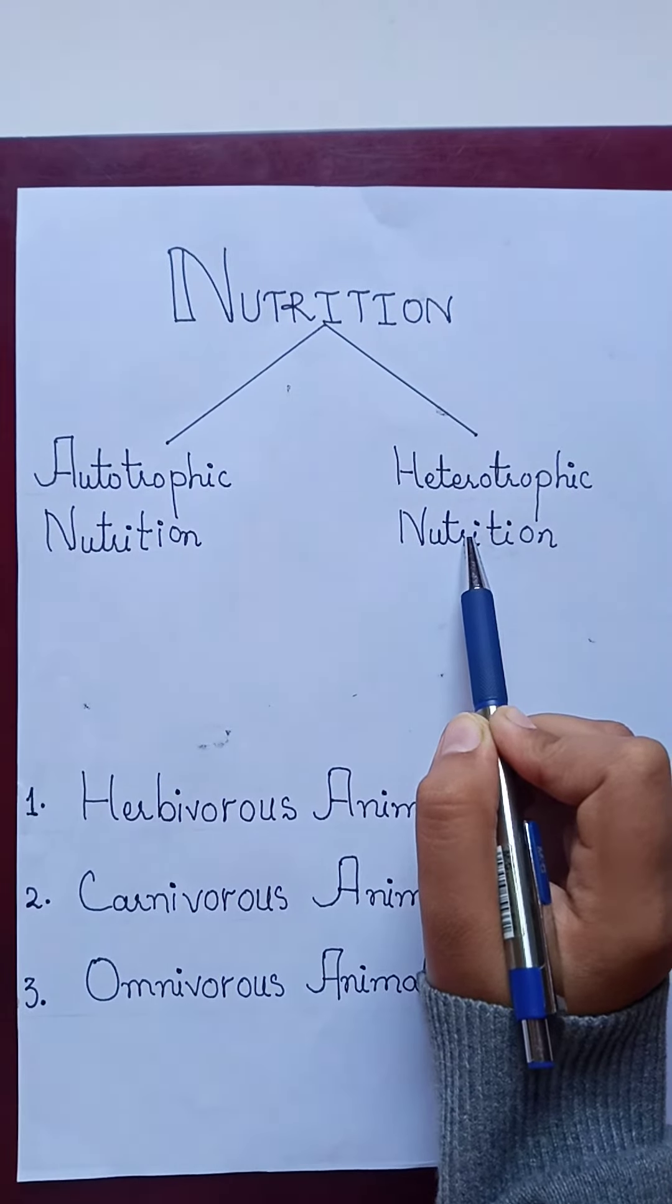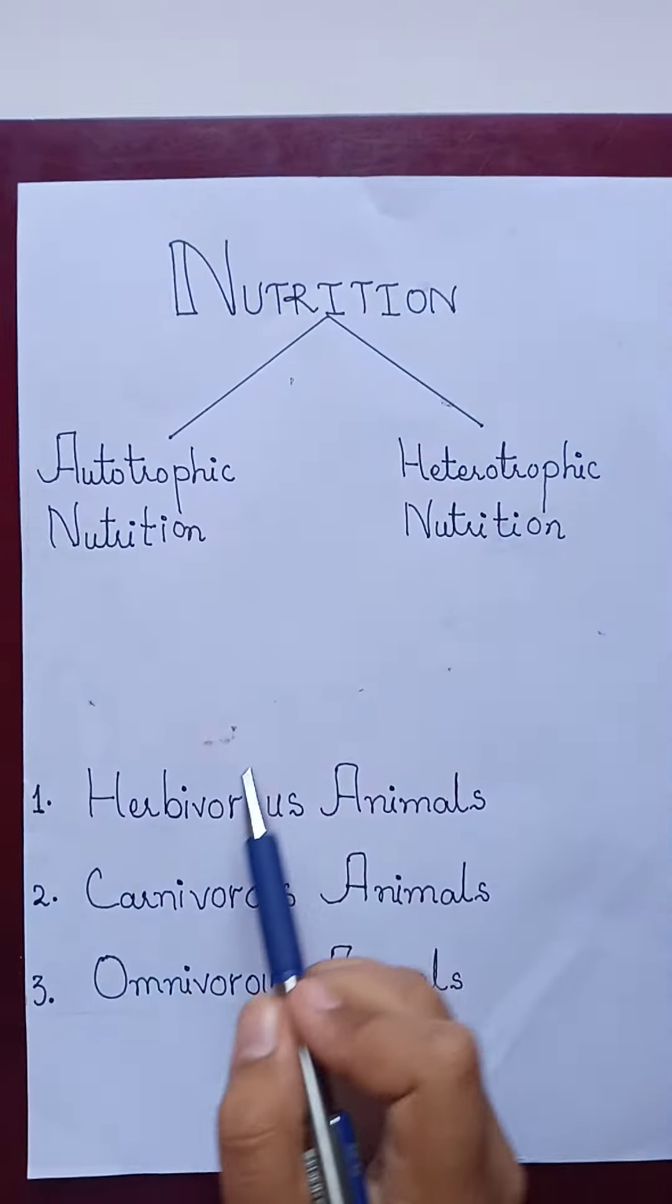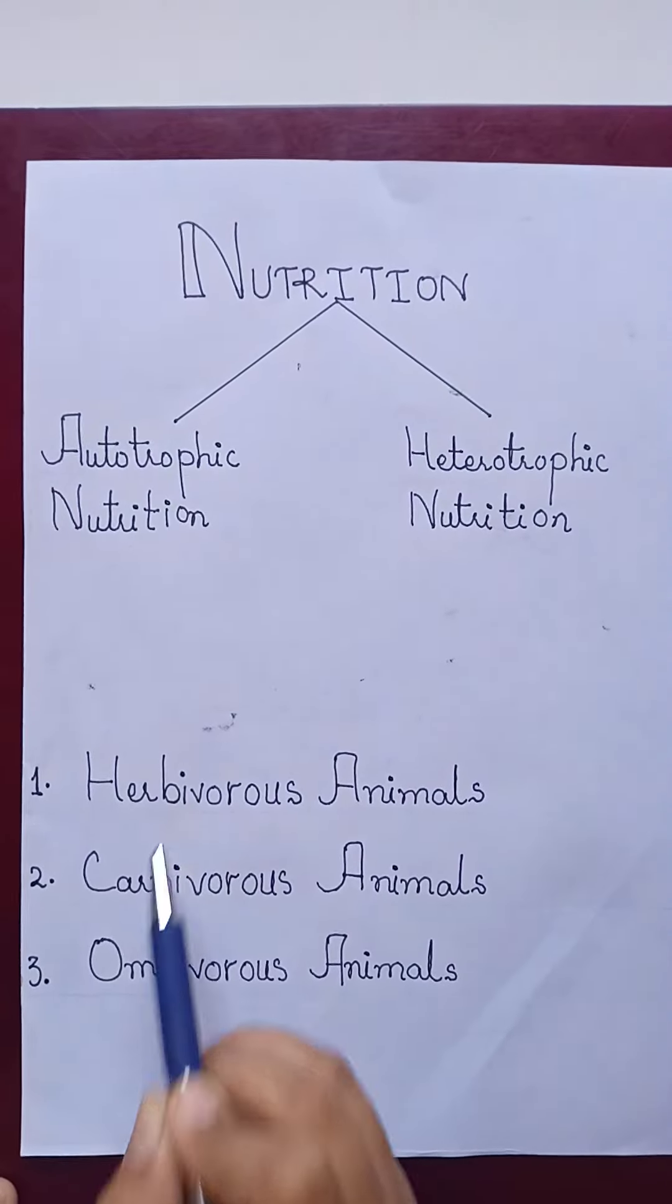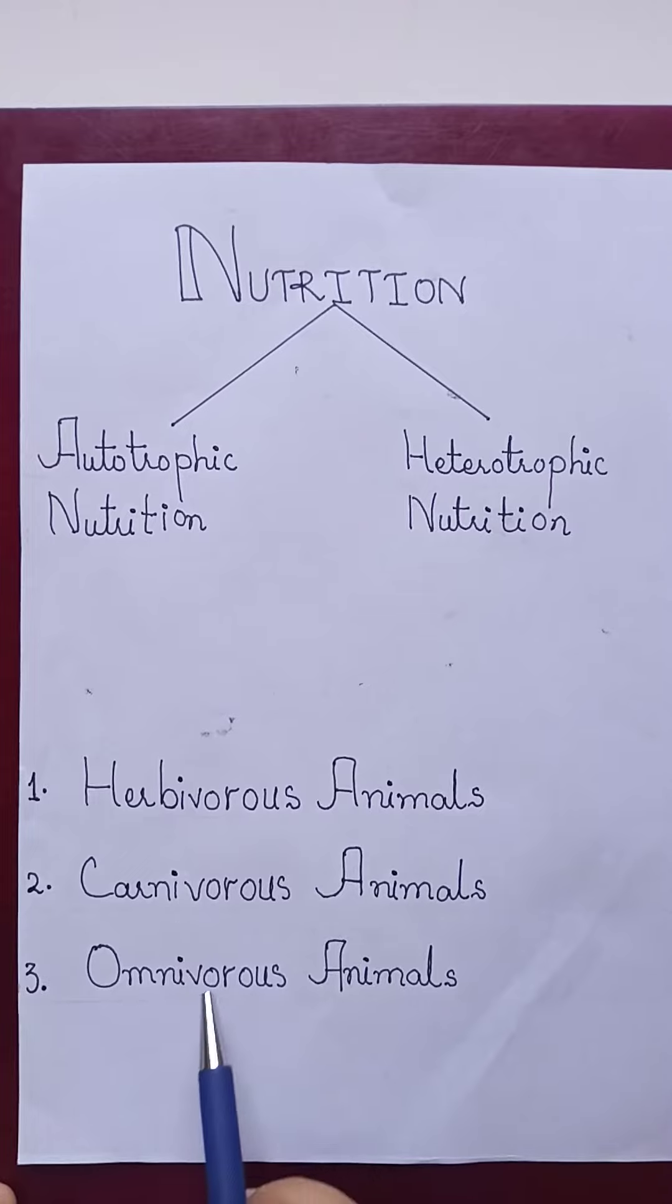All animals are divided into three categories on the basis of their eating habits: herbivorous animals, carnivorous animals, and omnivorous animals.